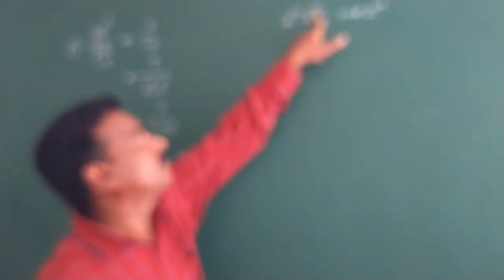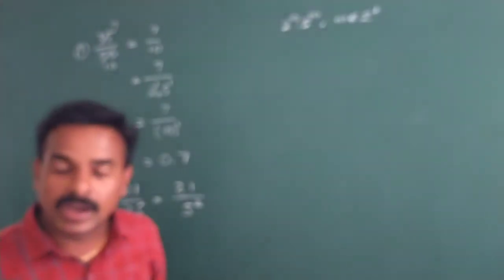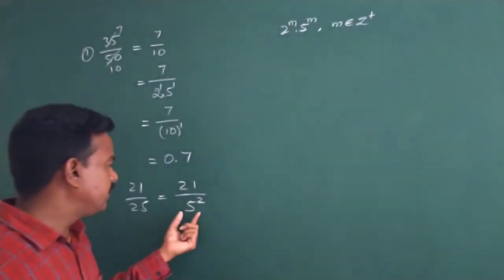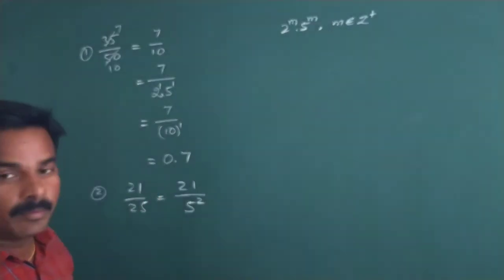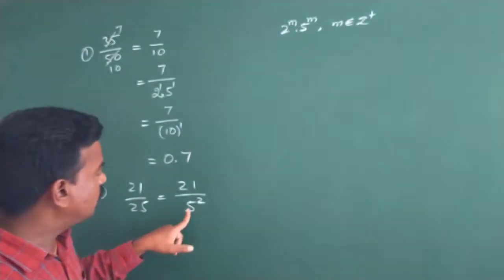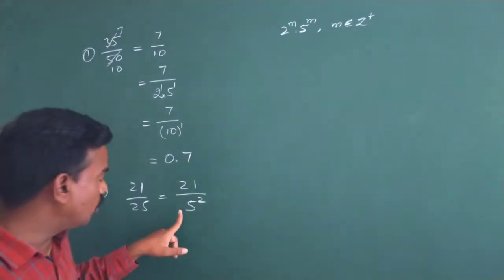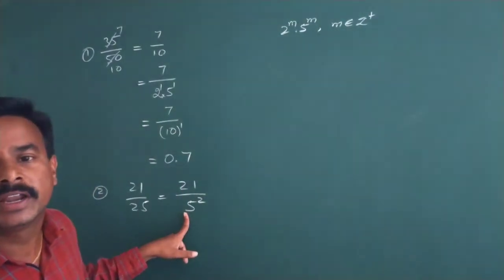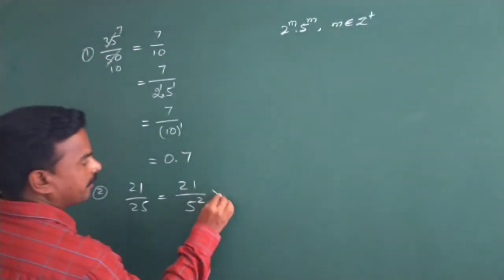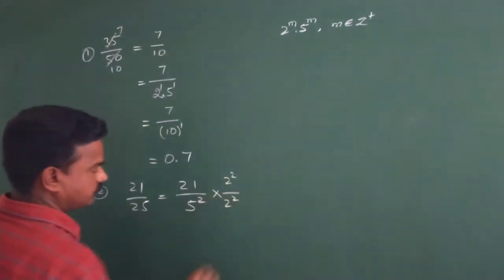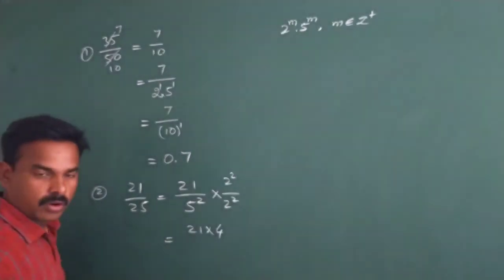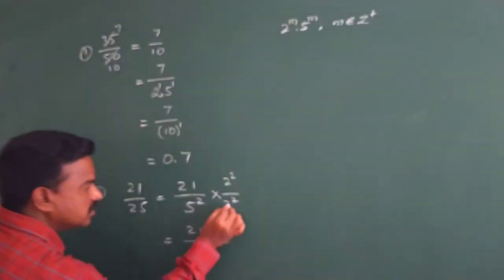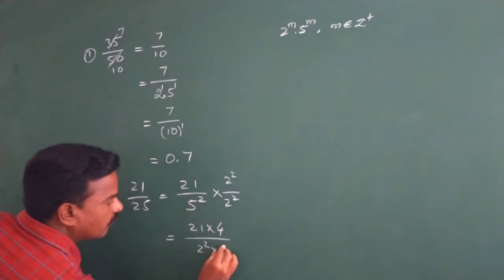Now you see the denominator is not in the form of 2 to the power of M into 5 to the power of M. So what we can do? We should change the denominator into the form of 2 to the power of M times 5 to the power of M. Since we have 5 to the power of 2, we need 2 to the power of 2 in the denominator. That's why we multiply by 2 to the power of 2 over 2 to the power of 2. So 21 into 4 divided by 2 to the power of 2 into 5 to the power of 2.